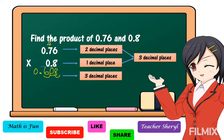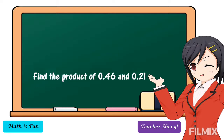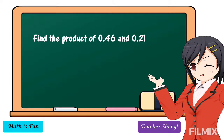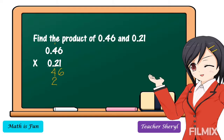Find the product of forty-six-hundredths and twenty-one-hundredths. To get the answer, first we're going to write the numbers in column. Then we're going to multiply just like multiplying whole numbers. So, forty-six times twenty-one: one times six equals six, one times four equals four. Next, two times six equals twelve — write two and regroup one. Two times four equals eight, plus one equals nine. Then we're going to add the partial products: bring down six, four plus two equals six, bring down nine.